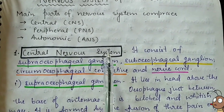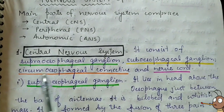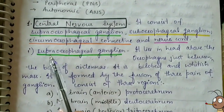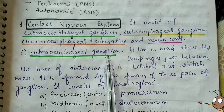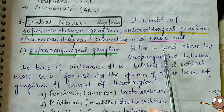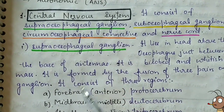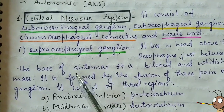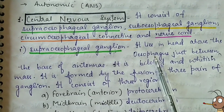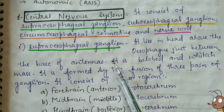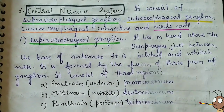The supraesophageal ganglion lies in the head above the esophagus, just between the base of the antennae. It is a bi-lobed whitish mass and is formed by the fusion of three pairs of ganglia.